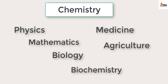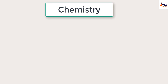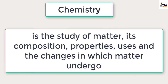When you produce something new from certain raw materials, what you have just done is chemistry. So by definition, chemistry is the study of matter: its composition, its properties, its uses, and the changes which matter undergoes.